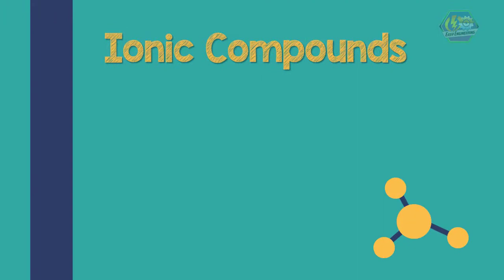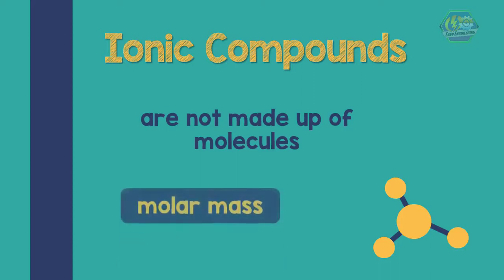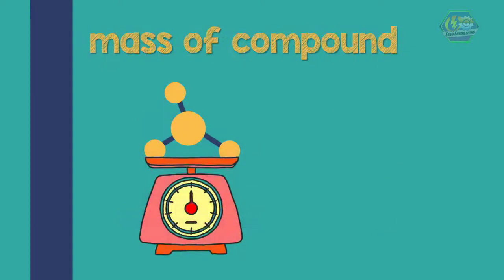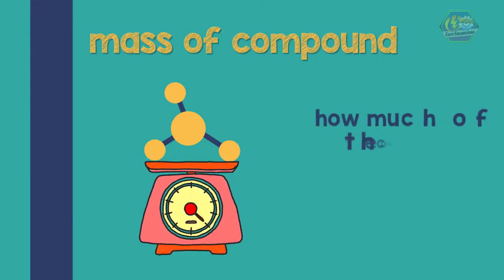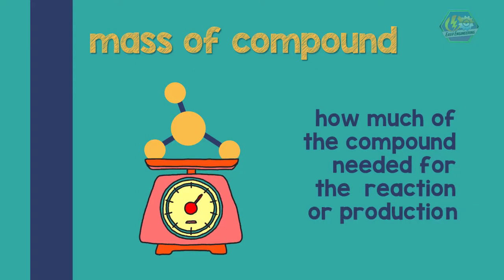But for ionic compounds, because they are not made up of molecules, the term used is formula mass instead of molecular mass. Knowing the mass of the compound is important in stoichiometry. This gives us a hint of how much of the compound is needed for the reaction or production.